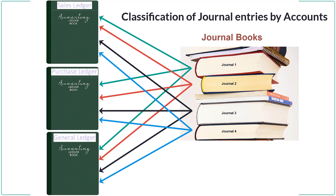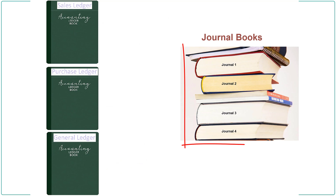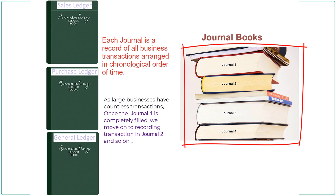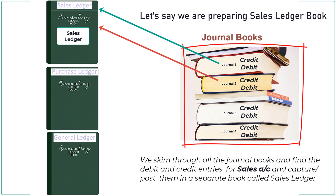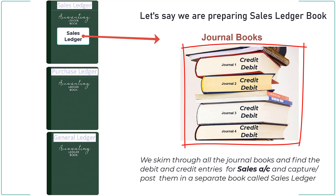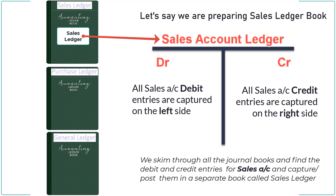Ledger is called the king of all books in the accounting world. A business may have multiple journal entry books, and in the journal entries we record all the debit entries and credit entries throughout. It is a mix of all different entries related to different accounts. Now we take all the debit entries from all the journals related to one particular account and list them on one side of the page. Similarly we take all the credit entries from all the journals related to the same account and place them onto the other side. As per standard procedure, all debits go on the left side and all credit entries go on the right side of the ledger.